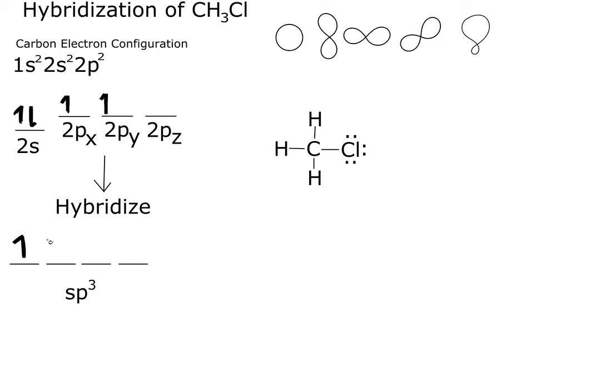So we bumped up our s electron to hybridize it. Now keep in mind, well, we can double check our steps. We have 1, 2, 3, 4 orbitals here, and we have 1, 2, 3, 4 orbitals here. So what we're really doing is combining our s orbital with our p orbital, and that makes sp3.